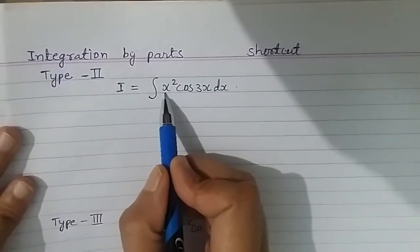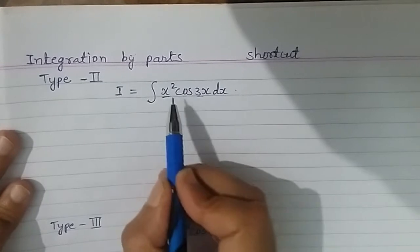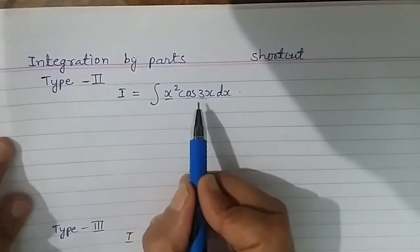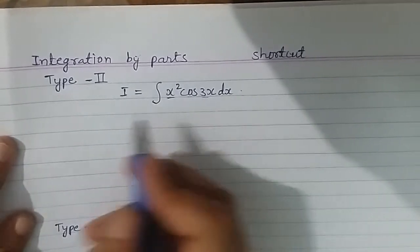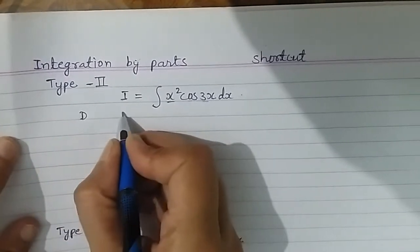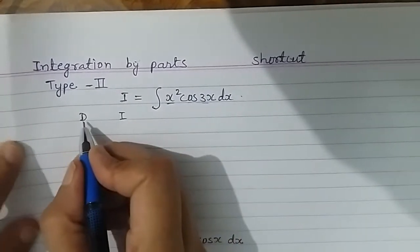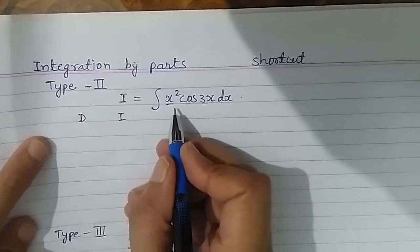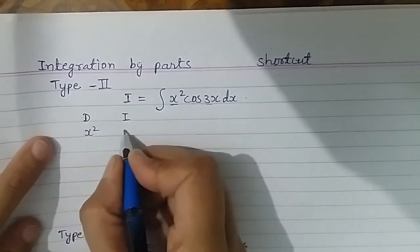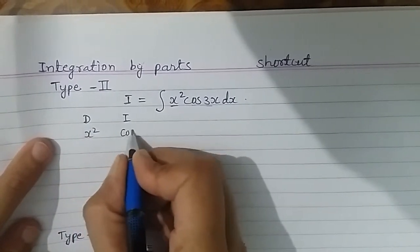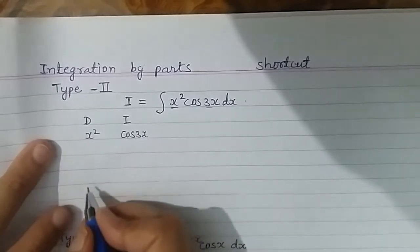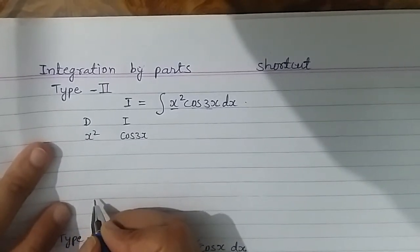In integration by parts we have two functions. Of these two functions, I will choose one to differentiate and one to integrate — let me mark them D and I. The function I will differentiate is x², and the function I will integrate is cos 3x.